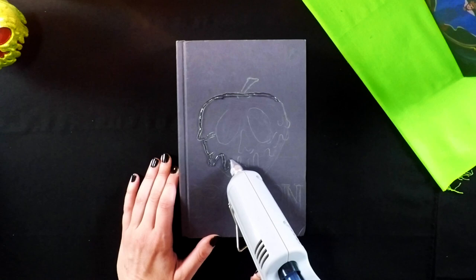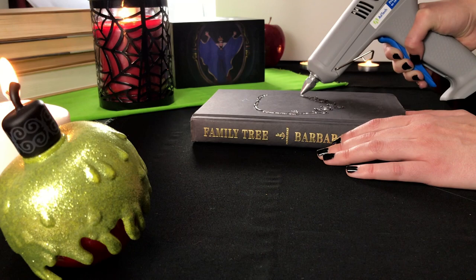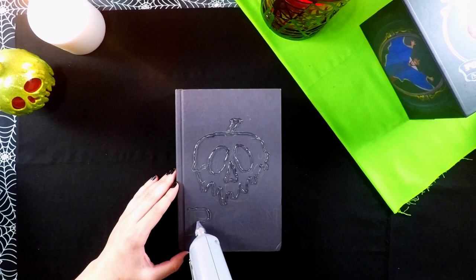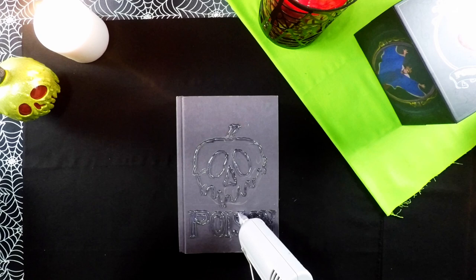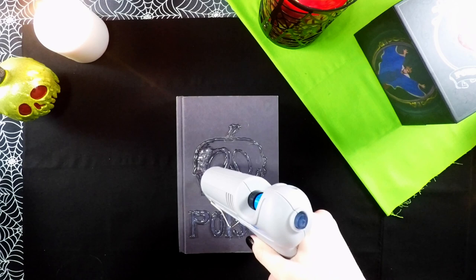Now you're going to take a hot glue gun and you're going to trace everything you did in pencil with hot glue. Once all the lines are traced you're going to go back in and fill in everything with hot glue.